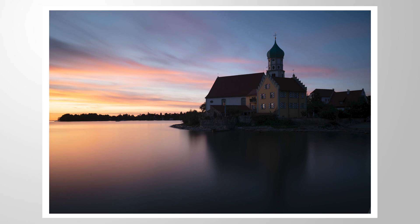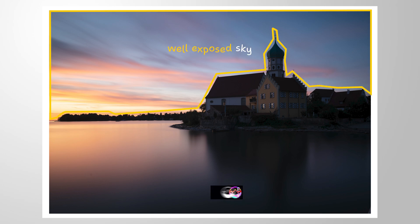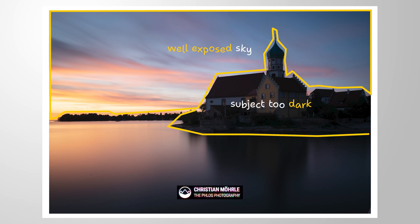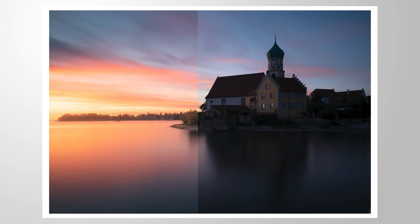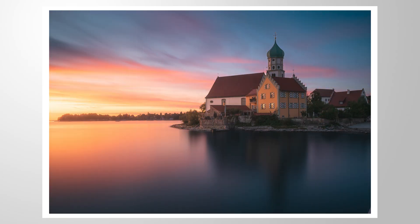Take a look at this RAW file. The sky is looking beautiful and well exposed, but the subject on the right side is super dark and we can't spot many details. This creates an unfortunate exposure imbalance between these two areas. So let me show you how we can fix that in Lightroom. Feel free to follow along by downloading the RAW file from the link in the description.